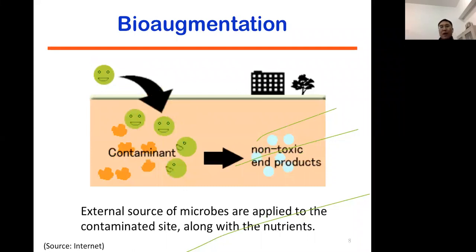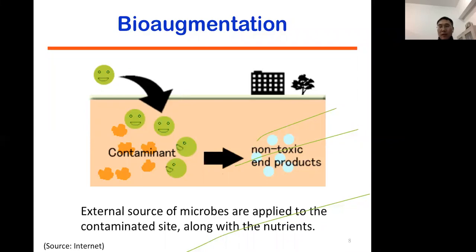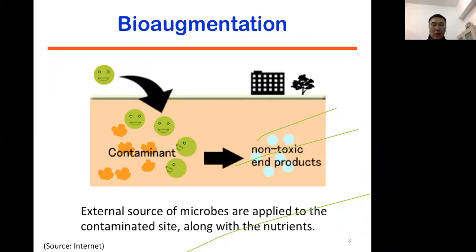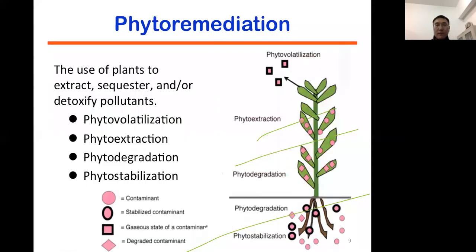The second approach is bioaugmentation. Bioaugmentation means that the organisms present in the soil are not capable of doing the degradation, so we introduce new organisms into the soil that can perform the degradation. Normally when people do bioaugmentation, they also add nutrients together with the organisms to the soil. In addition to biostimulation and bioaugmentation, we also talk about phytoremediation when discussing the remediation process.